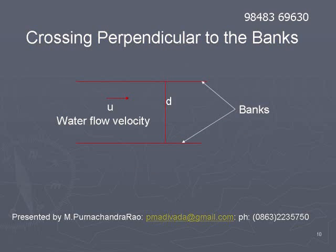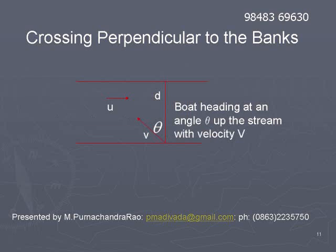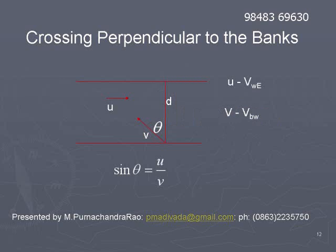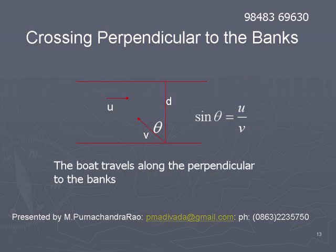Crossing the river perpendicular to the banks. Here u is the speed of water with respect to earth, and v is the velocity of boat with respect to water. When the boat is directed at an angle θ such that sin θ is equal to u by v — if the boat is heading up the stream at an angle θ with the perpendicular to the banks such that sin θ equals u by v — then only the boat travels along the perpendicular to the banks. So it should head up the stream with some angle so that it may cross the banks perpendicularly.